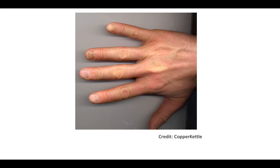Onycholysis is separation of the nail from the nail bed, appearing distorted. It can be related to fungal infections but in this rheumatological context is associated with psoriatic arthritis.